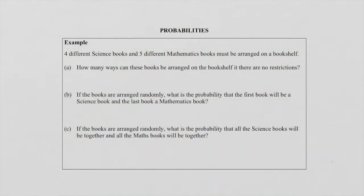In this problem they say to us that there are four different science books and five different mathematics books, so a total of nine books — four of them science, five of them mathematics. It is very important to notice that when we are dealing with books, clothes or people, they can't repeat. These books are different so they cannot repeat.